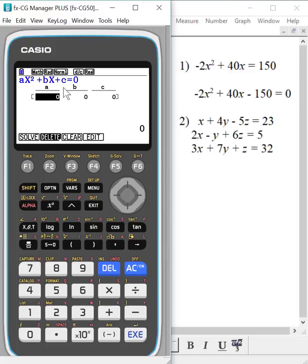So now I just enter in my coefficient values. So my coefficient for this first term is a negative 2. So I'm going to simply enter that in under where it says A. I'm going to hit execute after each time. My coefficient for the second is 40. So I'm going to choose 40. Hit execute. And my final coefficient C is negative 150. So I'm going to hit 150. Hit execute.